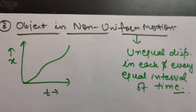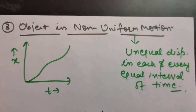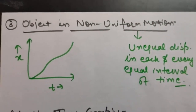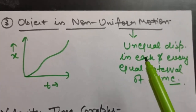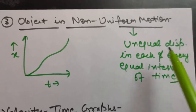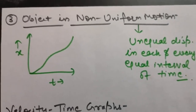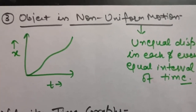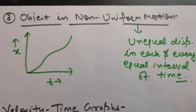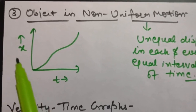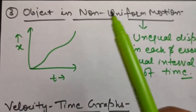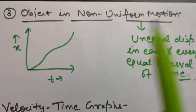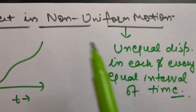The third graph is for an object in non-uniform motion. Non-uniform motion is the opposite of uniform motion - the object covers unequal displacement in each and every equal interval of time. For non-uniform motion velocity is not constant, so the graph can take any irregular shape.